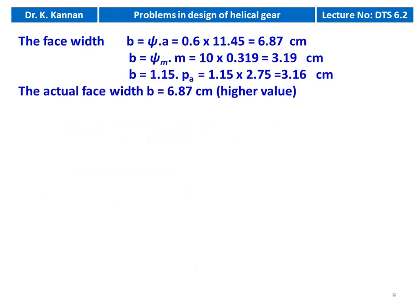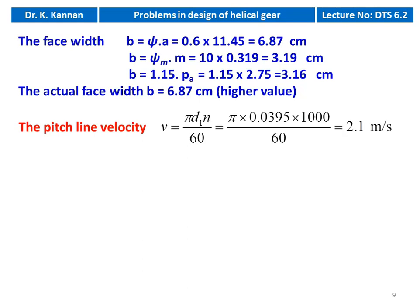We calculate the face width using three equations: b = ψ × a = 0.6 × 11.45 = 6.87 cm; b = ψm × m = 10 × 0.319 = 3.19 cm; b = 1.15 × axial pitch = 1.15 × 2.75 = 3.16 cm. The highest value is 6.87 cm. Pitch line velocity: v = π × d1 × n / 60 = π × 0.0395 × 1000 / 60 = 2.1 m/s.